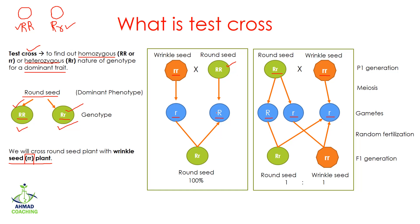In random fertilization, if the plant was homozygous dominant, small r will cross with capital R and we will have capital R small r — so all the seeds will be round shape. But in the heterozygous case, capital R can fuse with small r to form a heterozygote, and small r can also fuse with small r to form homozygous recessive. So we will have 50% round seeds and 50% wrinkle seeds. A recessive trait can only express when both alleles are homozygous, so when we see wrinkle seeds, it means the original plant was heterozygous.